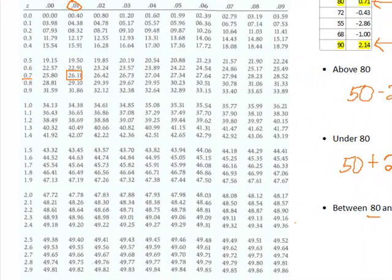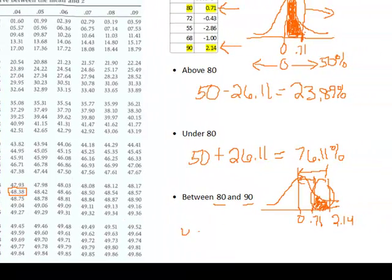If we look in our table, we can see that corresponds to, let's see, we go down to 2.1 in our first column. We go over to the column for 0.04, and that corresponds to an area of 48.38.